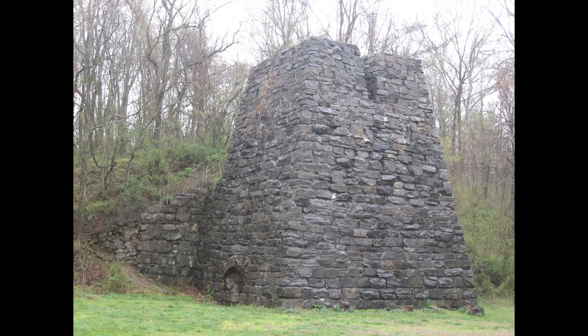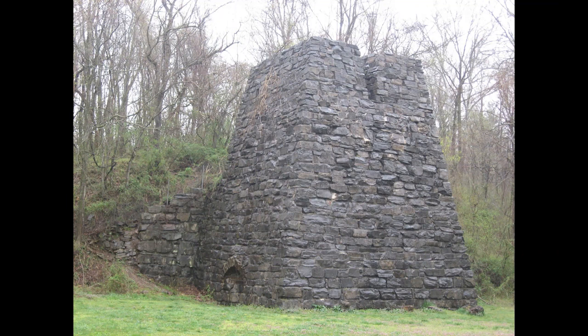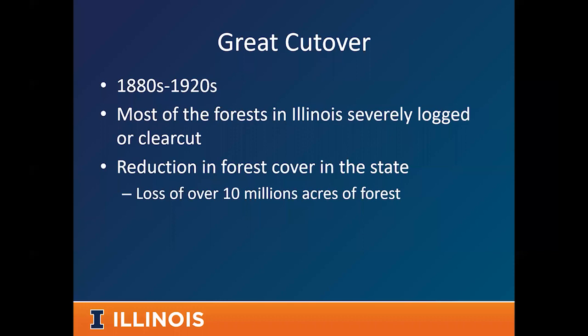All this led to large-scale clearing and utilization of our forest, which obviously had an influence on how things developed. This period culminated in what I call the Great Cutover — from the 1880s to the 1920s in Illinois, the vast majority, almost all of our forests were severely logged or clear-cut. This was the nadir of our forest, the low point in the amount of forest we had in the state. We saw a large reduction in forest cover, and there's an estimate that we lost about 10 million acres of forest at this point in time.